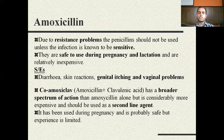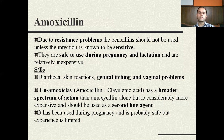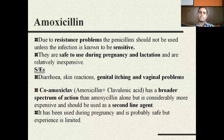Co-amoxiclav — the combination of amoxicillin with clavulanic acid — has a broader spectrum of action compared to amoxicillin alone, because we are adding a beta-lactamase inhibitor. This increases the spectrum of effect. Because the combination is relatively more expensive, it should be used as a second-line agent. Co-amoxiclav comes as 500 mg of amoxicillin and 125 mg of clavulanic acid. It has been used during pregnancy and is probably safe, however experience with co-amoxiclav in pregnancy is limited.